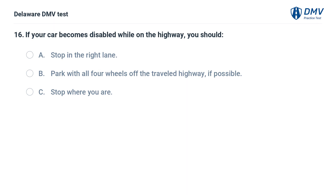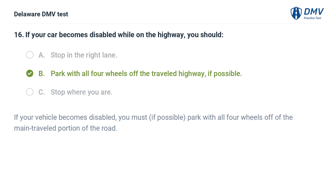If your car becomes disabled while on the highway, you should: A. Stop in the right lane. B. Park with all four wheels off the traveled highway, if possible. C. Stop where you are. Answer: B. Park with all four wheels off the traveled highway, if possible. If your vehicle becomes disabled, you must, if possible, park with all four wheels off of the main traveled portion of the road.